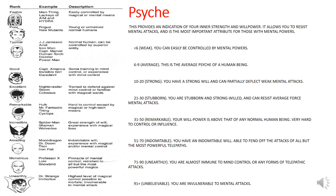Psyche indicates how strong you are when making mental attacks and how easily you can resist mental attacks. Someone with a Psyche of 20 to 30 would be stubborn and very strong-willed. Something over 90 is effectively invulnerable to mental attacks — for example, it's very difficult to take mental control of Wolverine because he has an incredible Psyche.